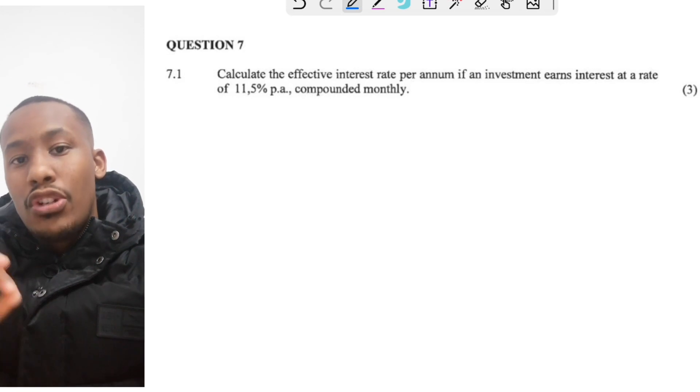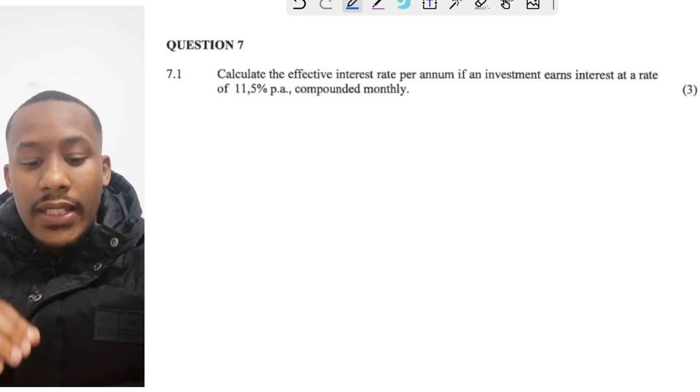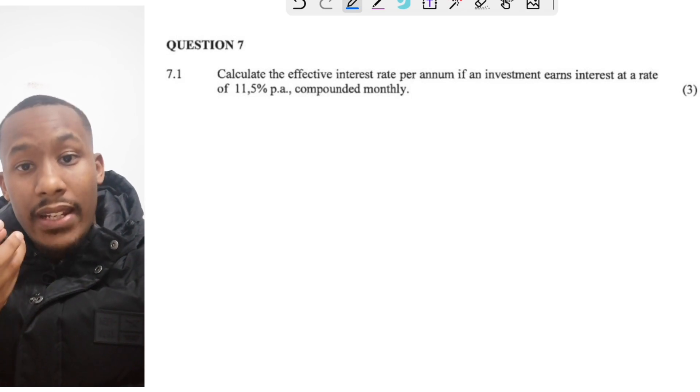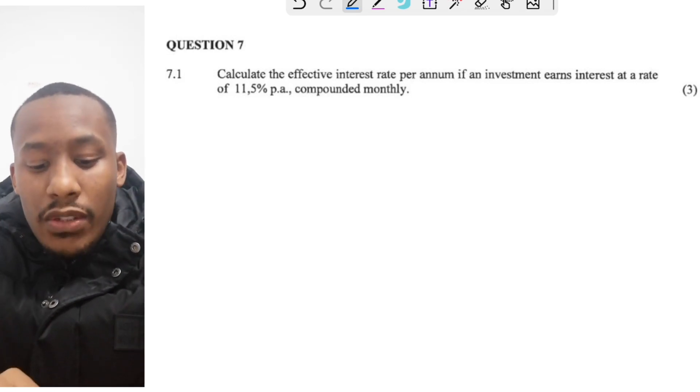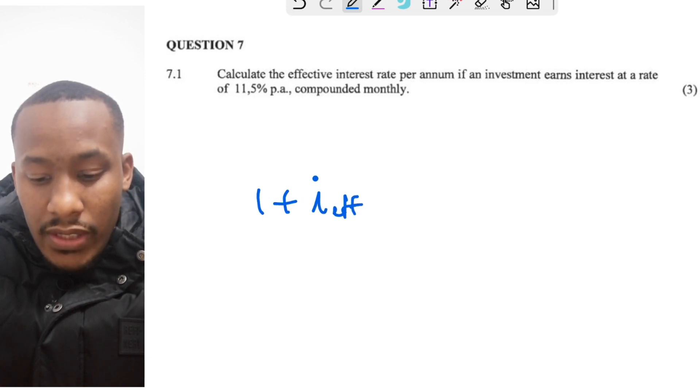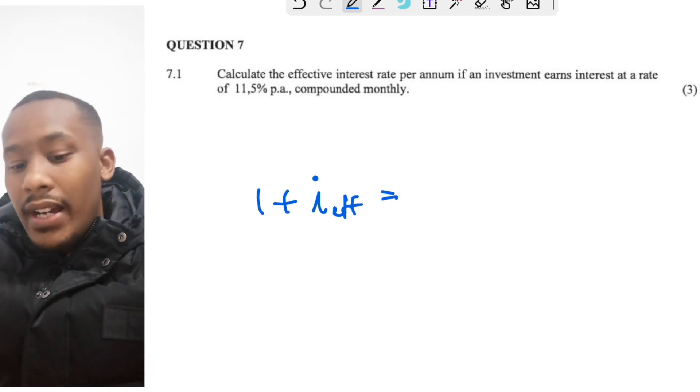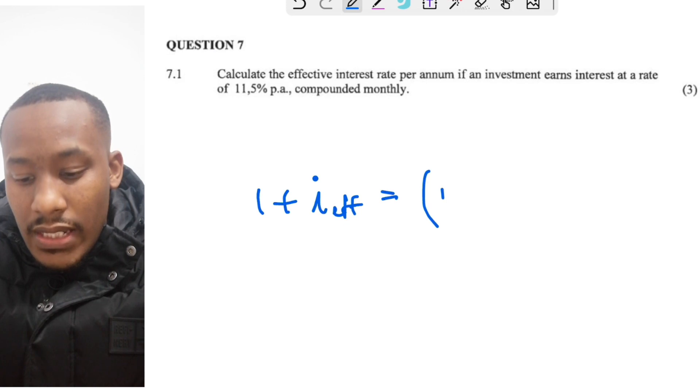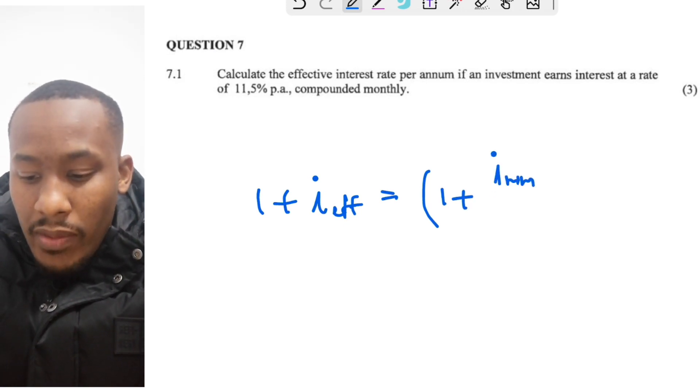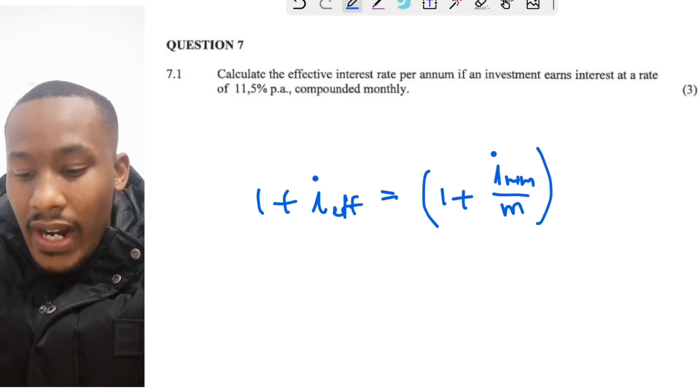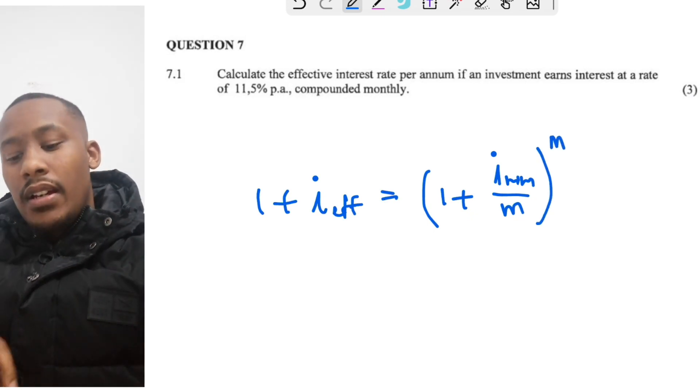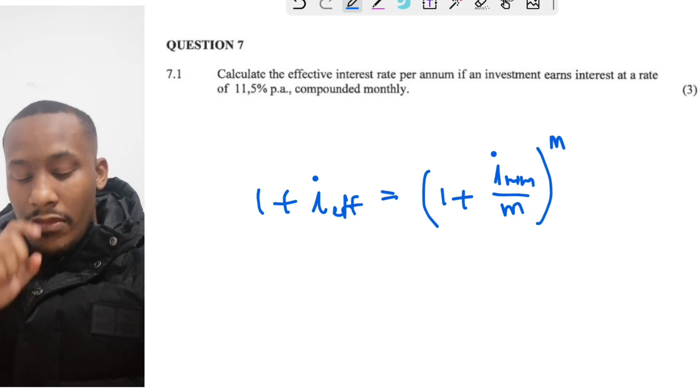Let's start off with the first question here. It says calculate the effective interest rate per annum if an investment earns an interest rate of 11.5% per annum compounded monthly. So this interest rate that's given to you is a nominal interest. And to convert a nominal interest into an effective interest, we have to make use of the following formula. So I'll just write it out over here.